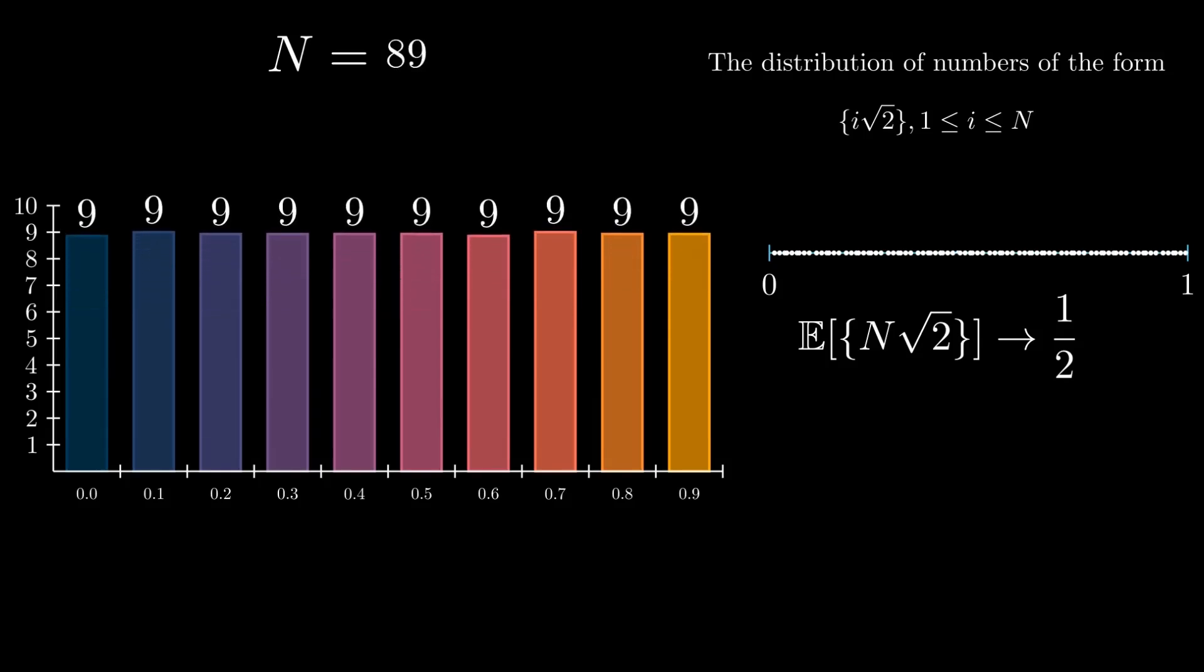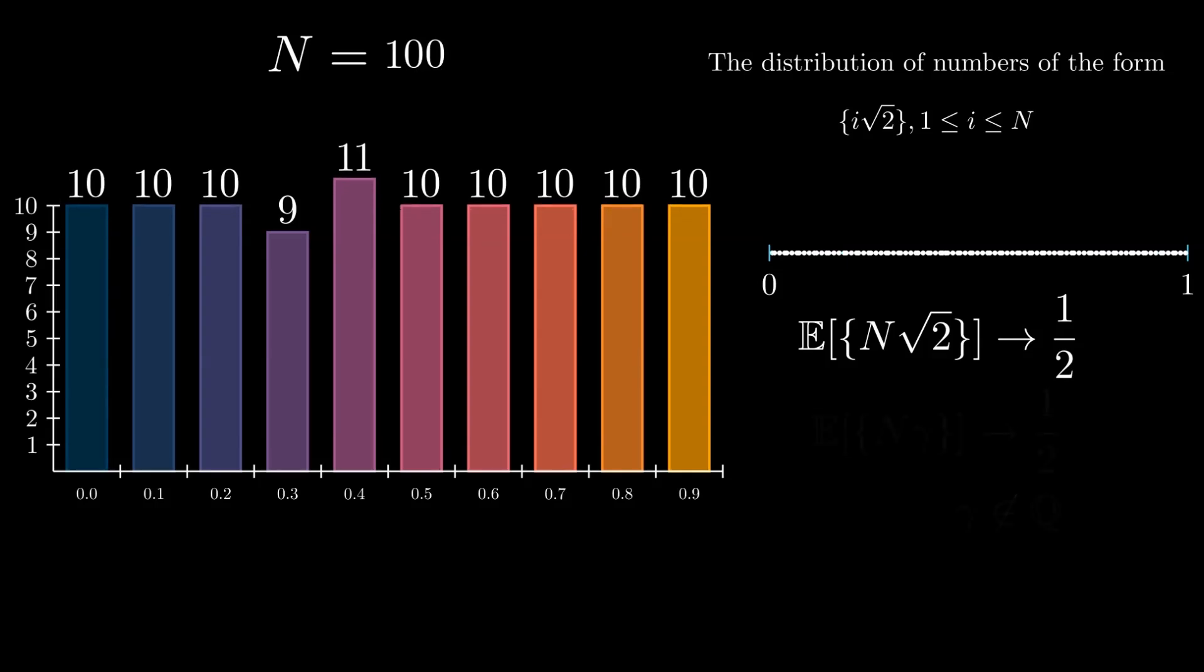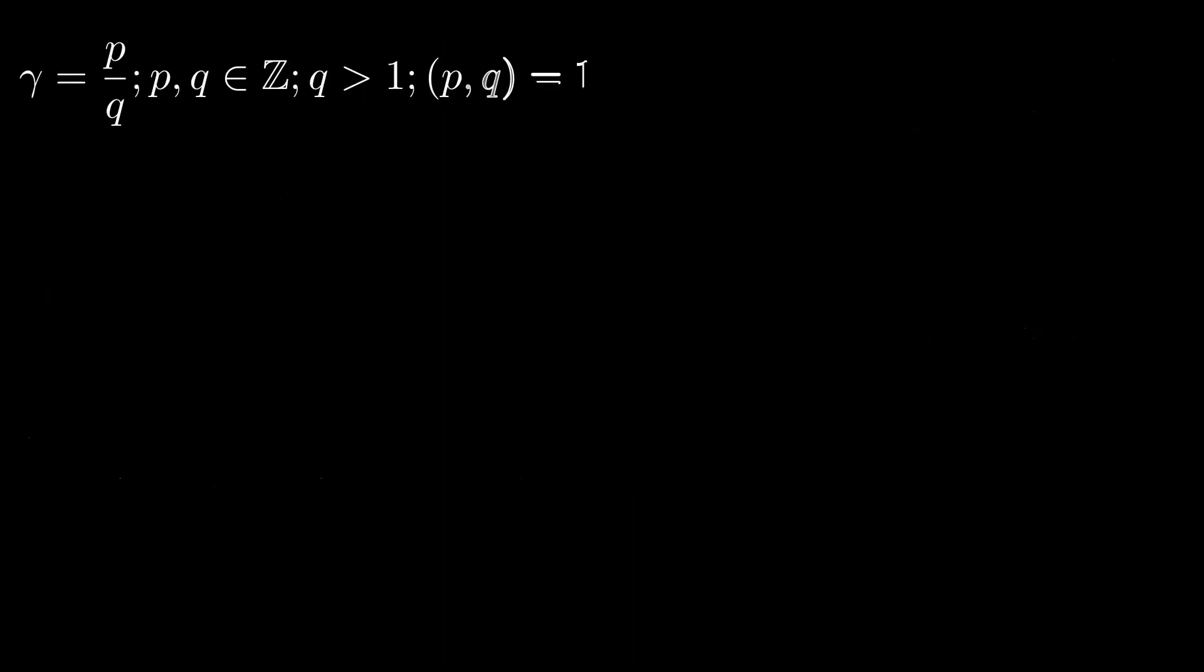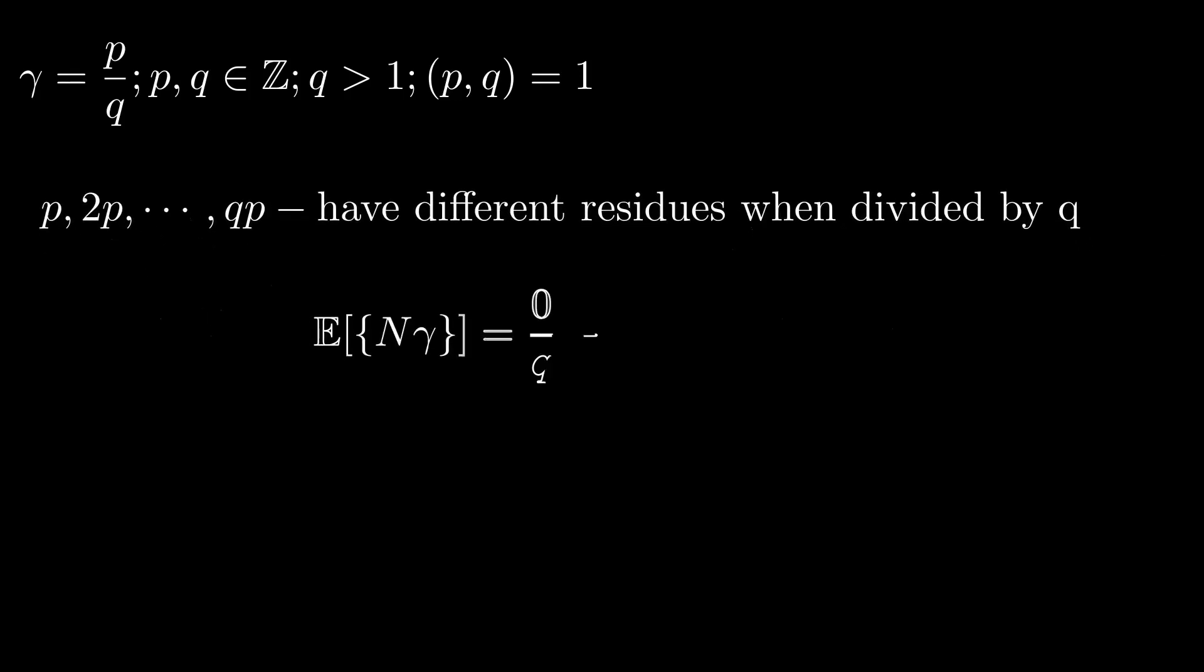However, this fact is known to be true for any irrational number. What should we do if gamma is a rational number? It turns out that in this case, since q is not equal to 1, the mathematical expectation is the arithmetic mean of the remainder of the division by q.